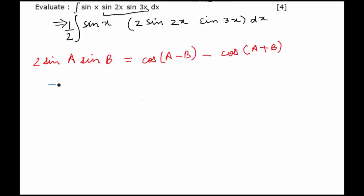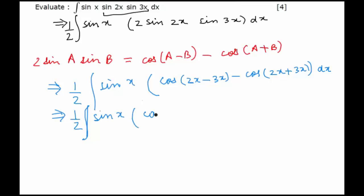Just applying the same formula here, we would get the integration equal to half integration of sin x times cos of 2x minus 3x minus cos of 2x plus 3x dx. This gives us half integration of sin x times cos of minus x, which is cos x, minus cos of 5x dx.